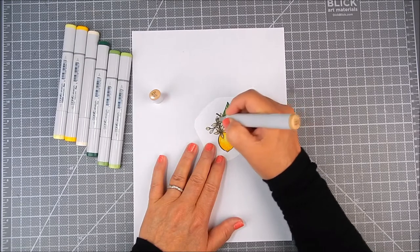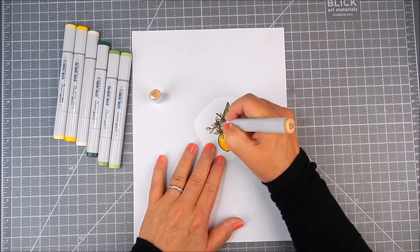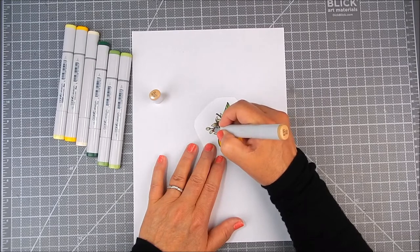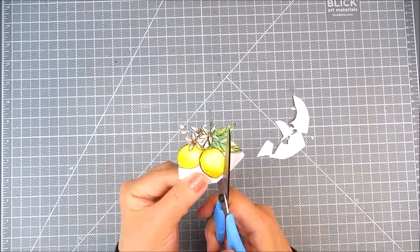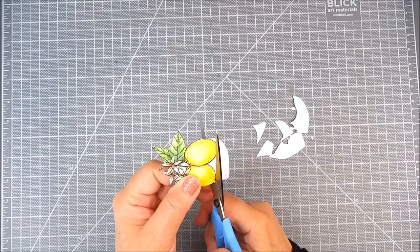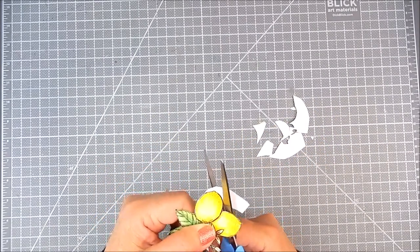And so I'm going to fussy cut this, which is just cutting it out with scissors. I'm going to make a standalone lemon accent for the card. So I'm just cutting around the stamping.